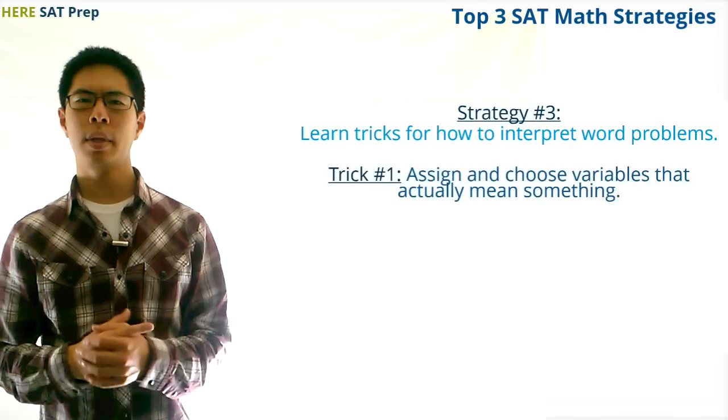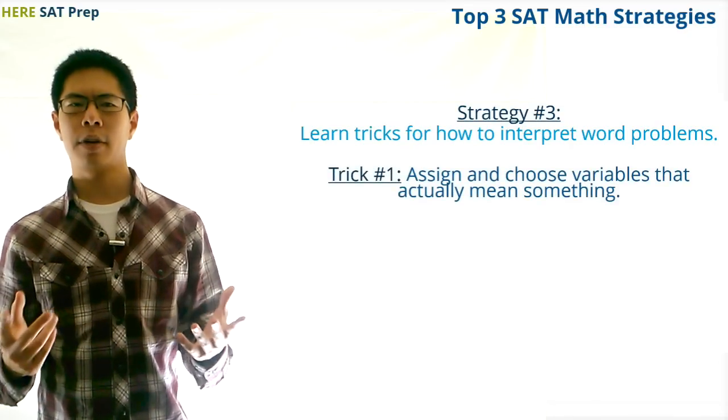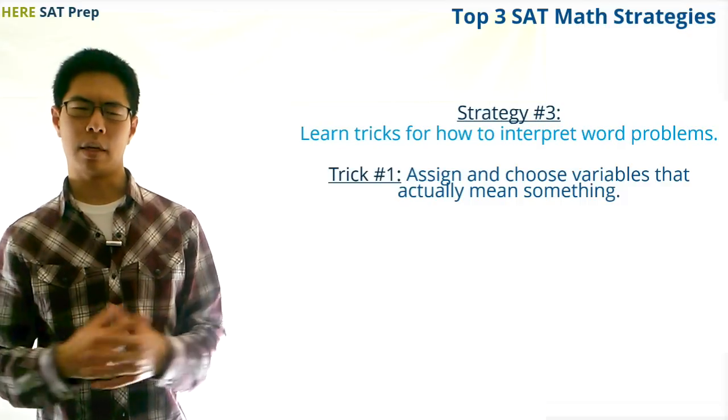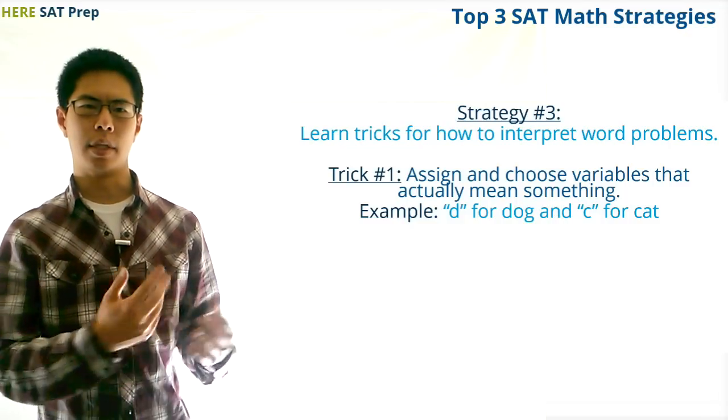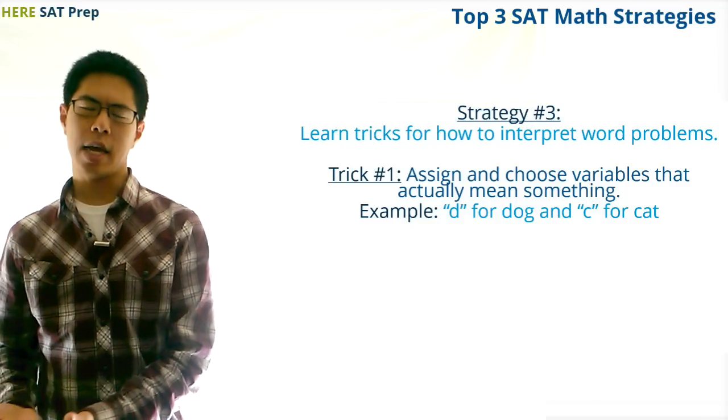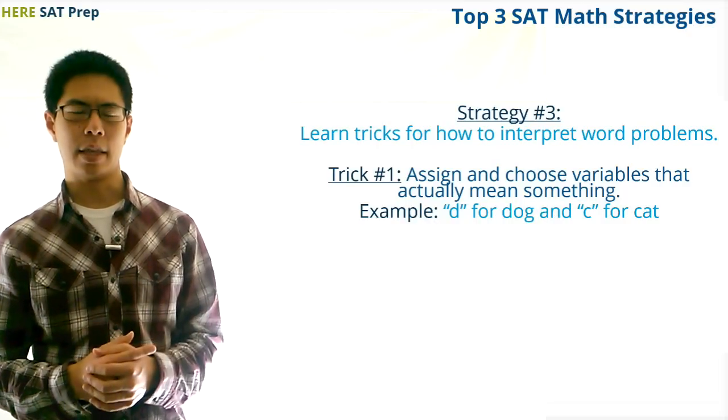First, it's normally a good idea to assign variables to the things in the problem we don't know and to choose variables with letters that actually mean something. For example, if we are dealing with dogs and cats, let's make our variables d for dogs and c for cats instead of random letters like x and y, which don't really mean anything.